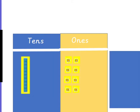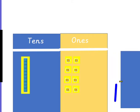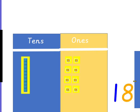What about this one? Oh, there's just one 10. What do we call a number with just one 10? When there's just one 10, we say 'teen'. Let's see how we write this number. There's one 10 and 1, 2, 3, 4, 5, 6, 7, 8 ones. So that is the number 18.